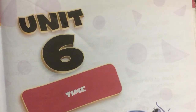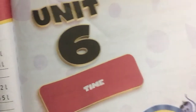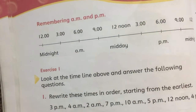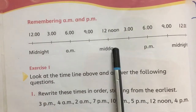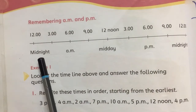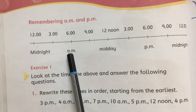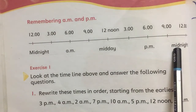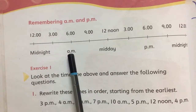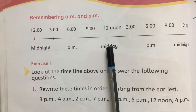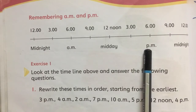Assalamu alaikum, Grade 3. Today we will start Unit Number 6, which is Time. Everybody should know how to read a clock. Our first topic is remembering AM and PM. Here is a timeline having midnight, midday, and midnight. The time between midnight and midday is known as AM, and the time between midday and midnight is referred to as PM.